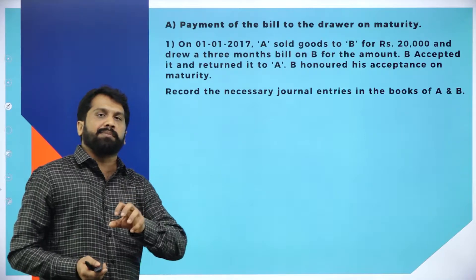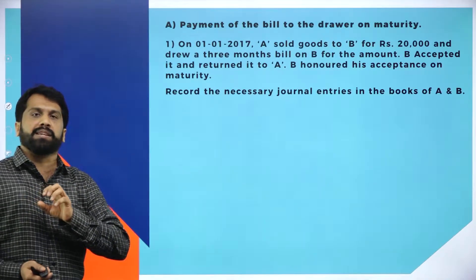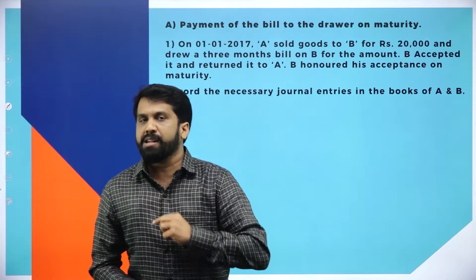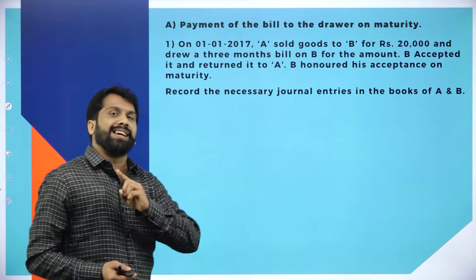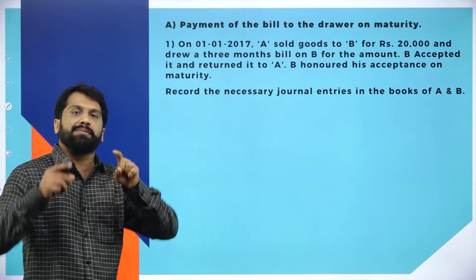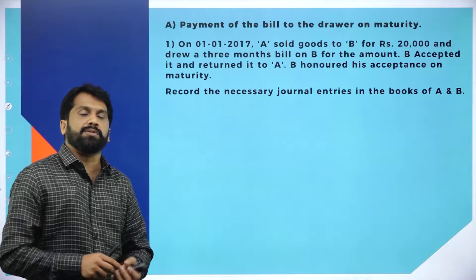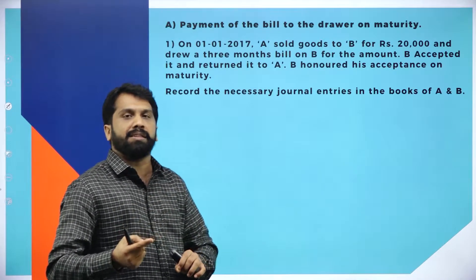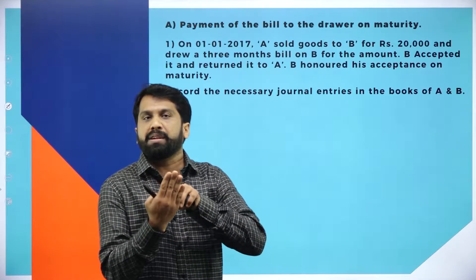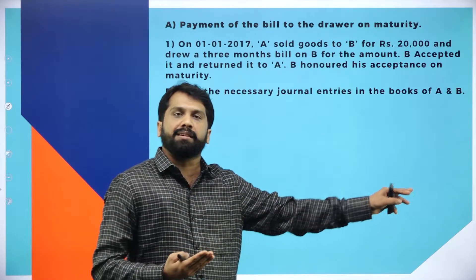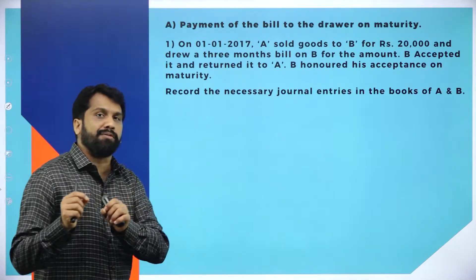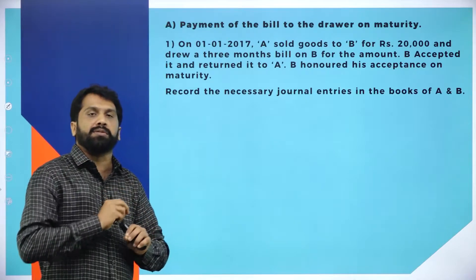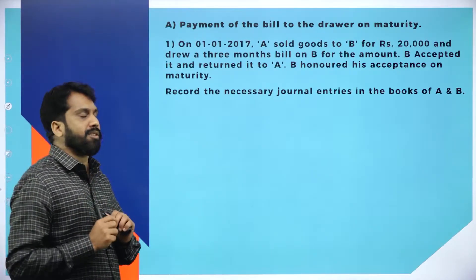The buyer bought some goods from the seller and said the money will be paid after three months. For that, the seller has given some document. The buyer has to sign it, saying that after three months I will give your money. The document will be with the seller. This procedure we call Bills of Exchange.